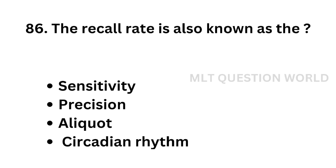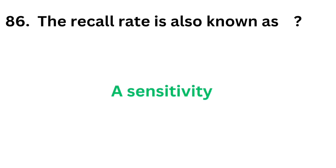Question number 86. The recall rate is also known as: Option A: Sensitivity, Option B: Precision. The correct answer is Option A — Sensitivity. The recall rate is also known as Sensitivity. The recall rate is the true positivity rate. Although recall and precision are related concepts, they are different from each other.